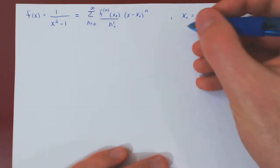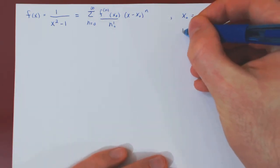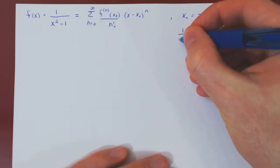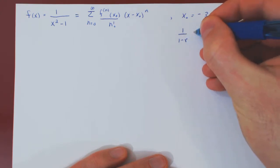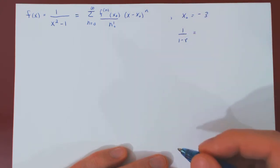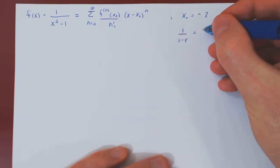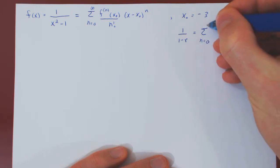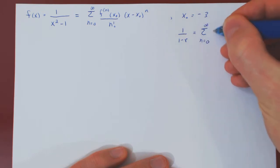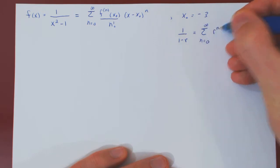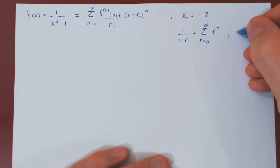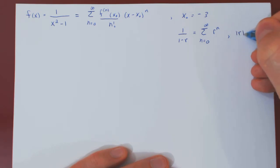Recall that 1 over 1 minus r can be expressed as an infinite series, and the equality is valid only if the absolute value of r is strictly less than 1.